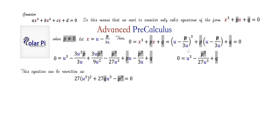After multiplying both sides by 27u³ and rearranging, we get this equation. Notice that this is quadratic in u³ — it's of the form 27a² + 27qa - p³ = 0 where a = u³. So it's a quadratic in u³.